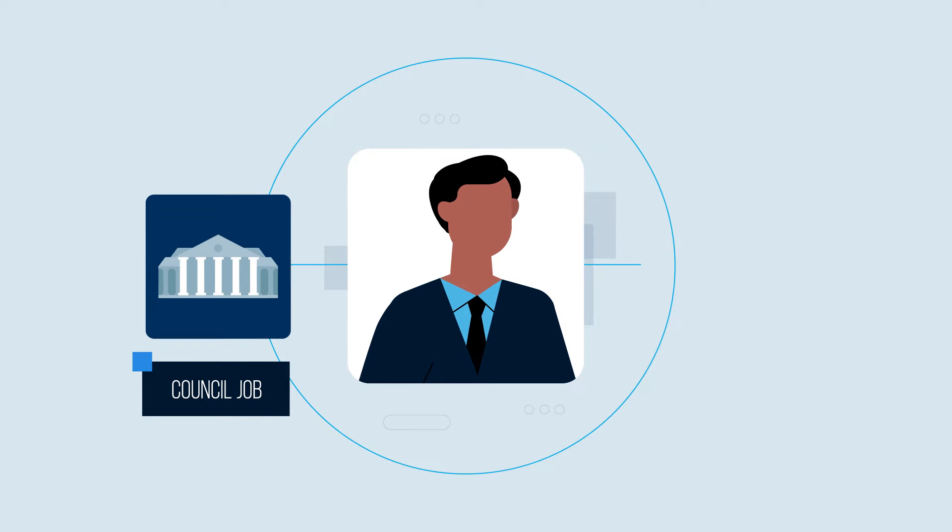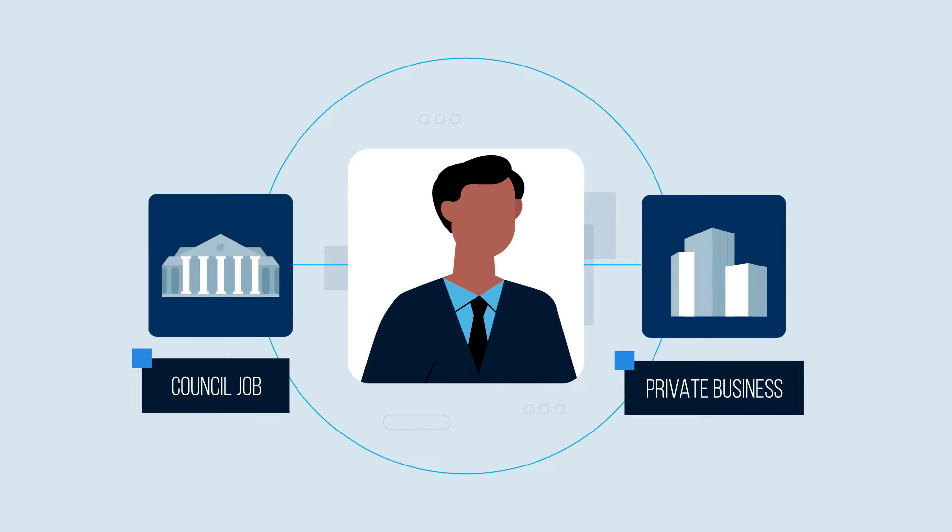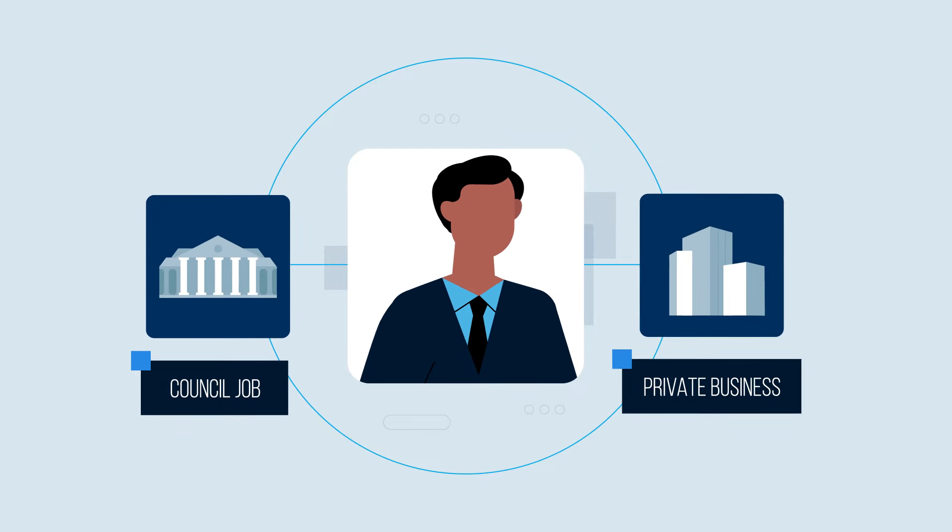For example, the Heritage Officer at a council also has a private business providing heritage advice to the property industry. From time to time, the Heritage Officer's private clients submit development applications to the council that he has to assess. A university is running a tender process for a new building project, but a person involved has a friend who wants to bid for the work. A compliance officer has to investigate unlawful behaviour by a business run by the captain of his football team.